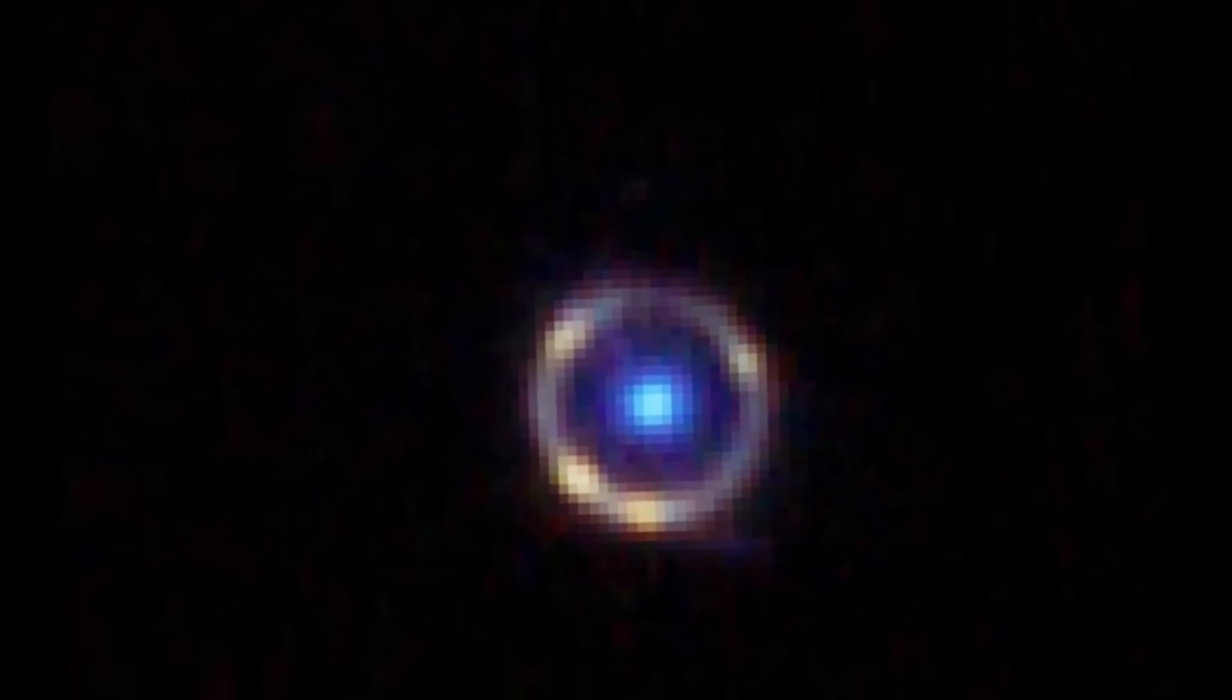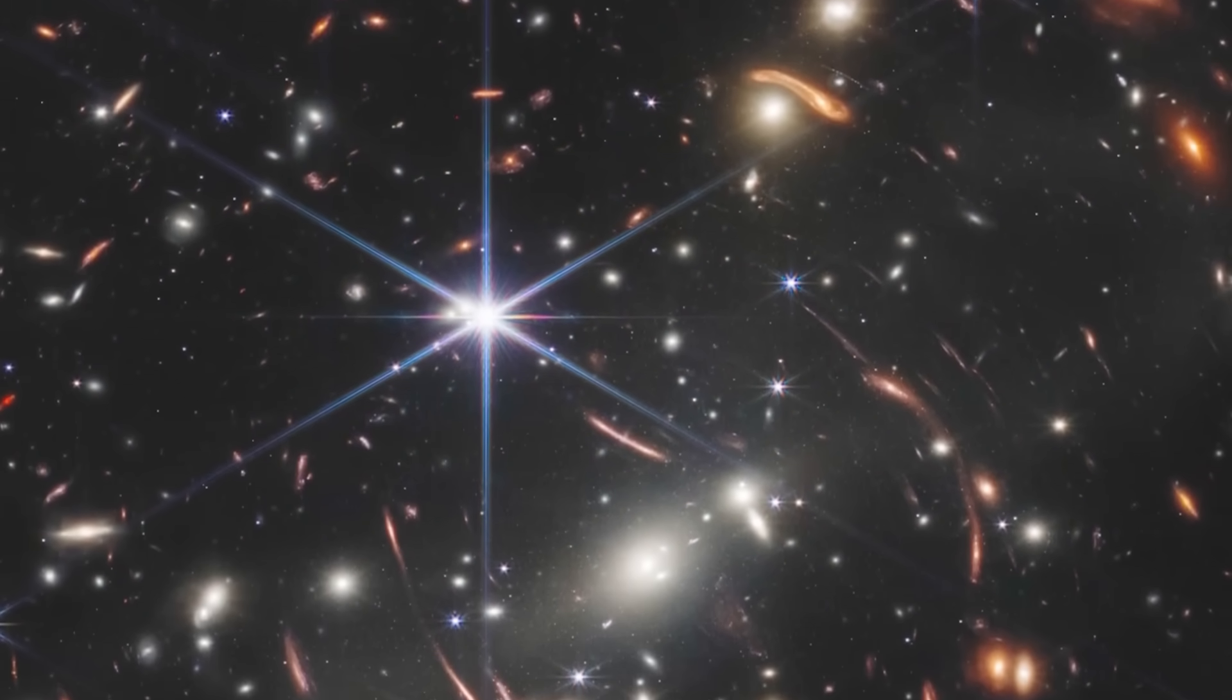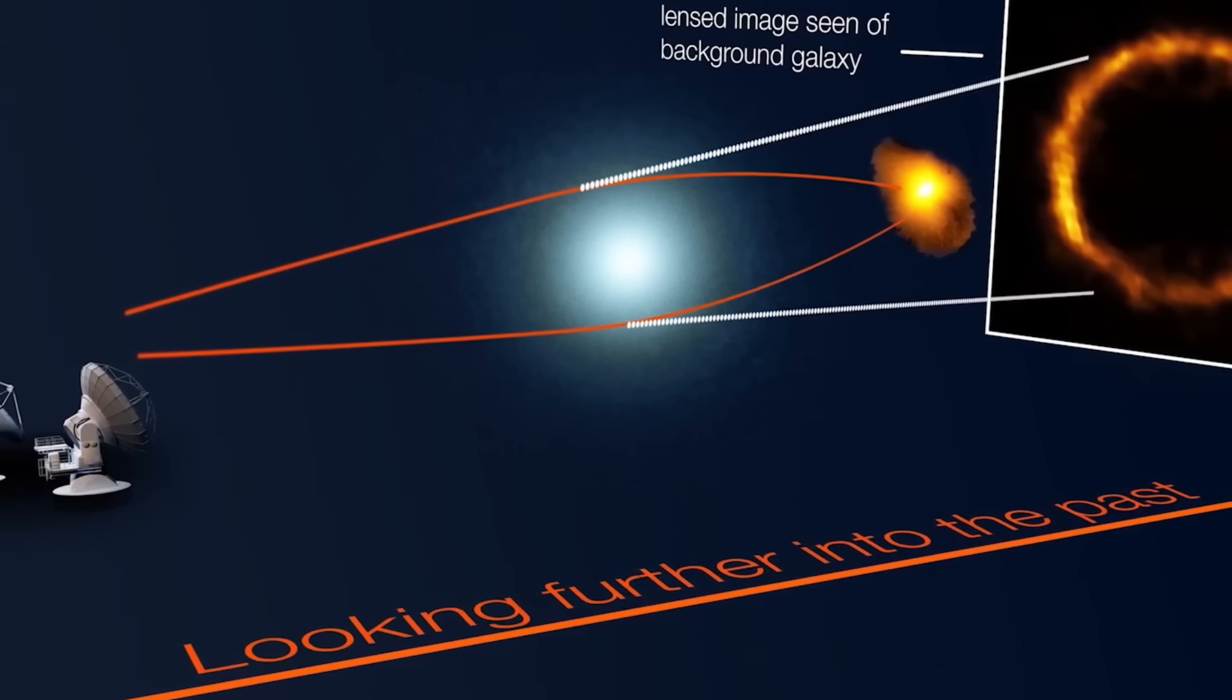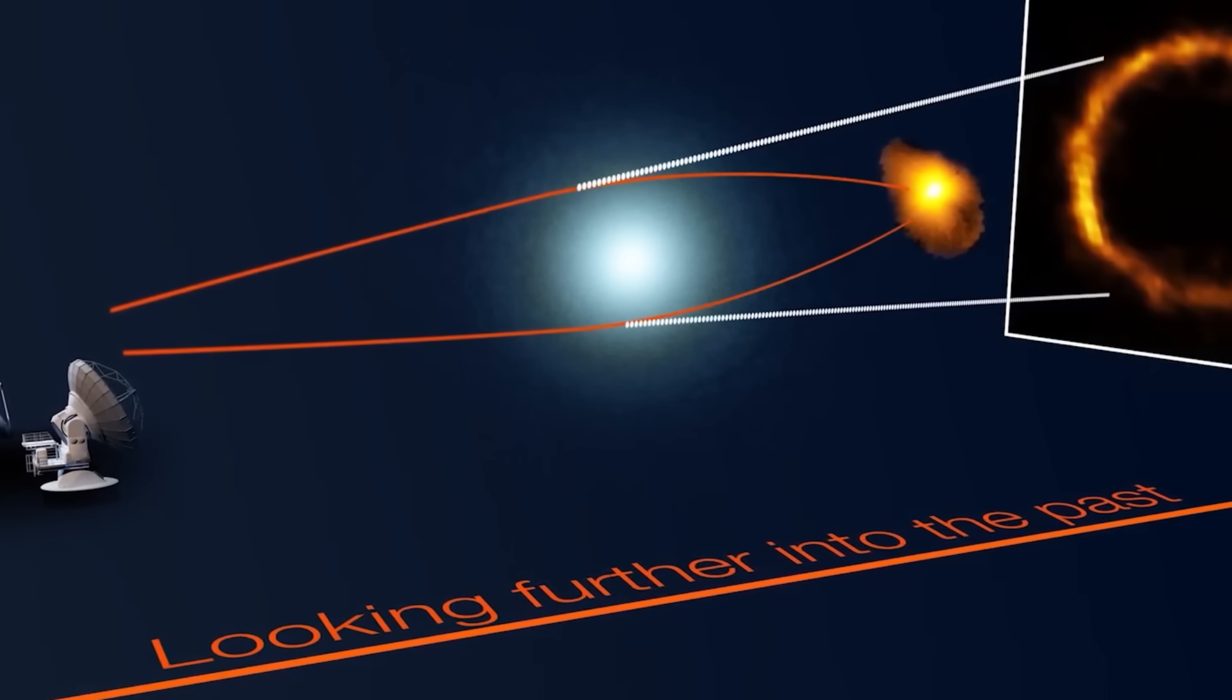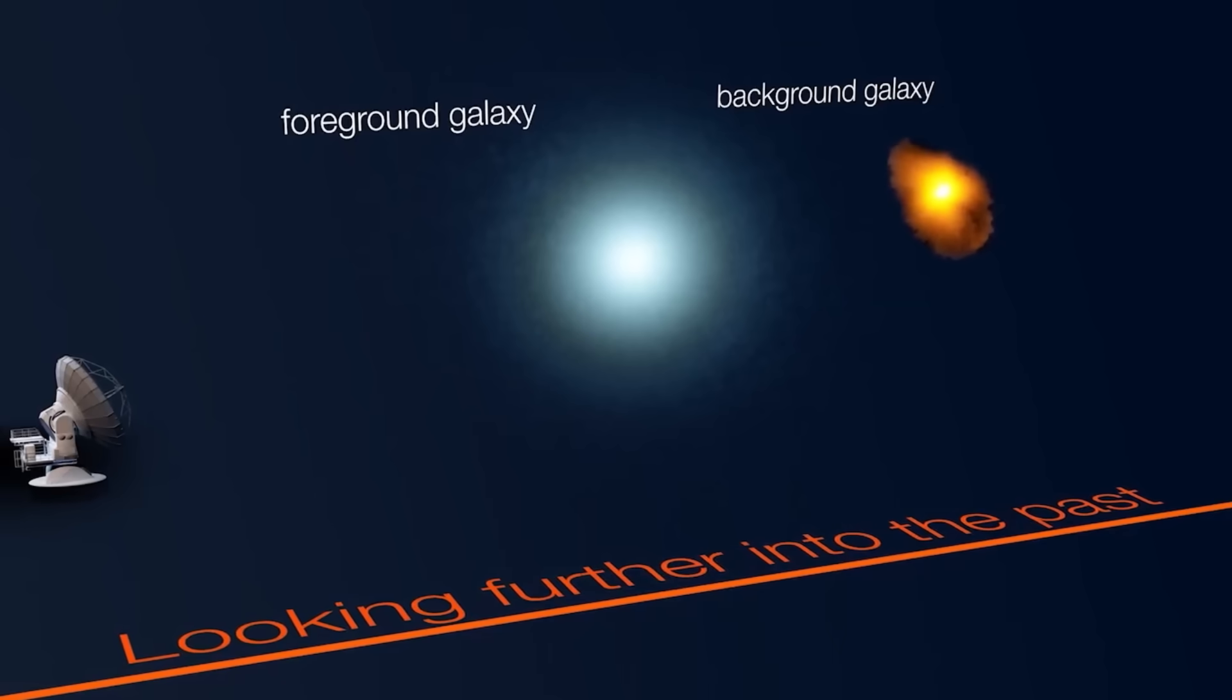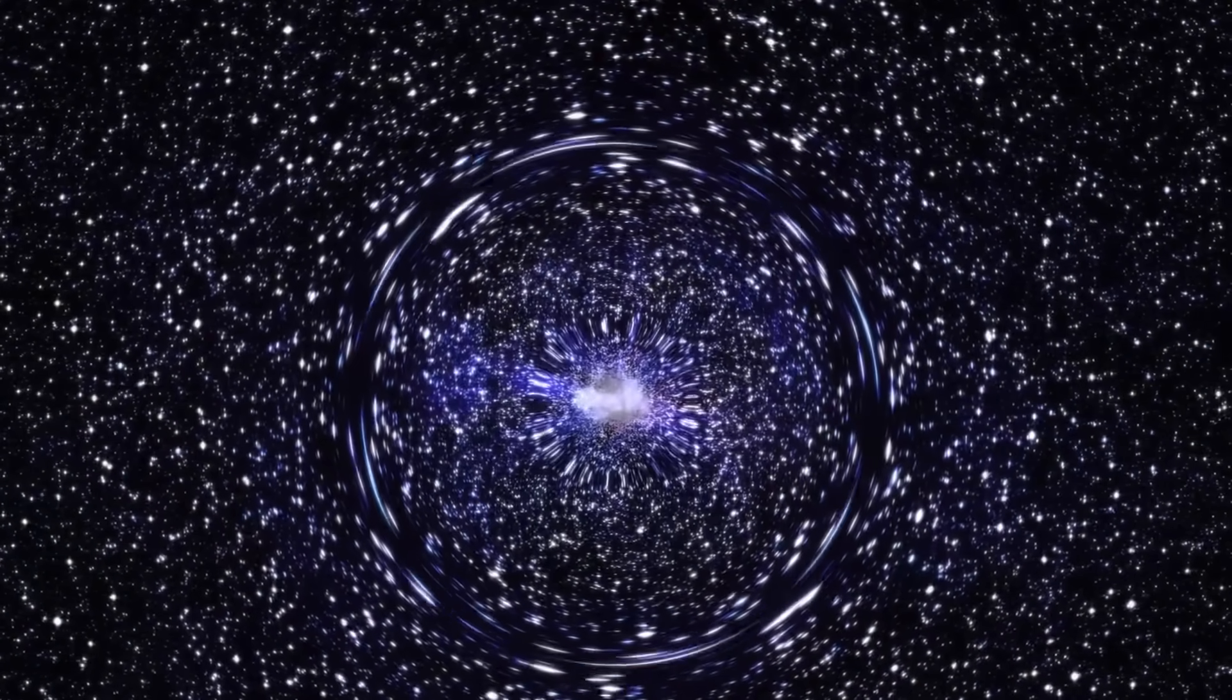But the ring didn't just look beautiful—it told a darker story. Because the light had been stretched and curved not just by gravity, but by time itself. We were looking at a message from the past, bent into shape by the invisible architecture of the cosmos. And some began to ask: what if these rings, these distortions, are windows—not just to distant galaxies, but to deeper truths about the shape of our universe and its origin?